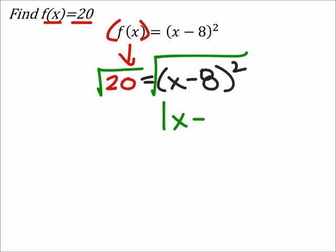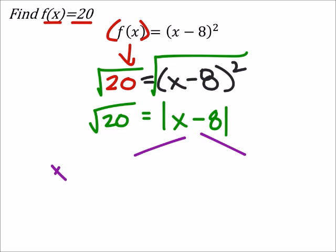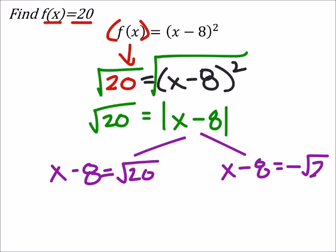So now I have the absolute value of x minus 8, this equals the square root of 20, and we can look to simplify that later. From here I can split, so x minus 8 equals the positive square root of 20, but x minus 8 equals the negative square root of 20.